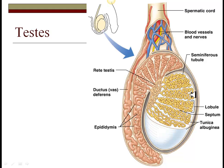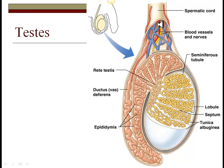Inside each lobule you'll find this coiled tube or seminiferous tubule for sperm production. You'll also notice this comma-shaped structure here — this is the epididymis, where sperm are typically stored and mature. You can see a continuation of the vas deferens running on up; refer back to your other slide for that pathway.